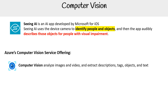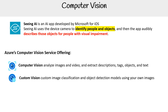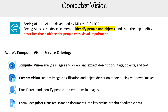Some of the Azure computer vision service offerings include: Computer Vision, which analyzes images and videos to extract descriptions, tags, objects, and text. Custom Vision, for custom image classification and object detection models using your own images. Face, which detects and identifies people and emotions in images. And Form Recognizer, which translates scanned documents into key-value or tabular editable data.